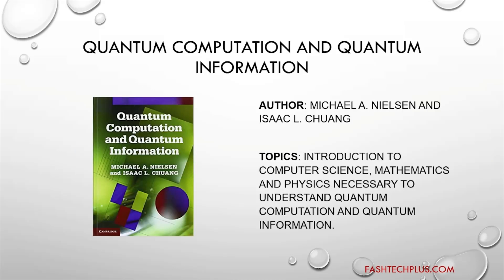The second book is 'Quantum Computation and Quantum Information.' This book introduces you to the main ideas and techniques of the field of quantum computation and quantum information. The authors feel that the rapid rate of progress in this field has made it difficult for newcomers to obtain a broad overview of the most important techniques and results. First, they will introduce you to the background material in computer science, mathematics and physics that is necessary to understand quantum computation and quantum algorithms. The second purpose of the book is to develop the detailed, central results of quantum computation and quantum information. With thorough study, the reader should develop a working understanding of the fundamental tools and results of this exciting field.